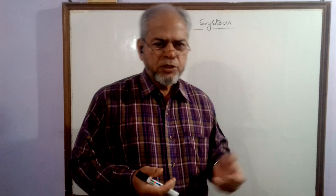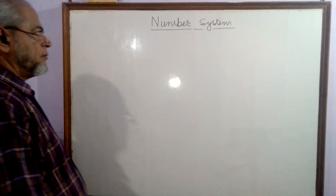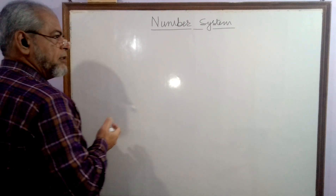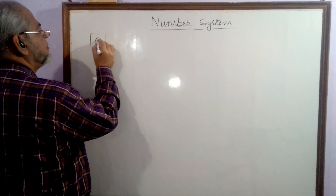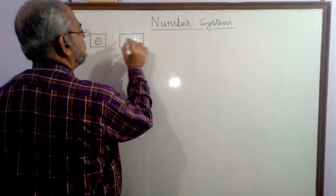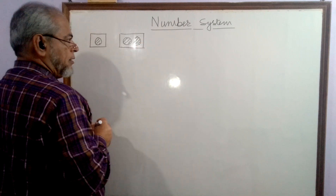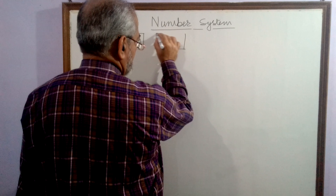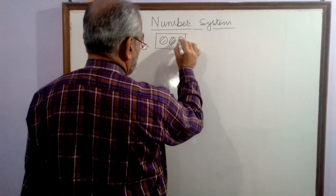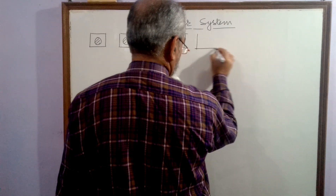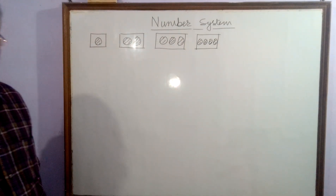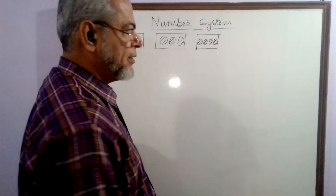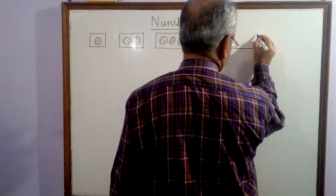He developed the capacity to count the things he possessed, and he found that quantities may be different in different cases. For that purpose, he fixed some symbols to count these items.